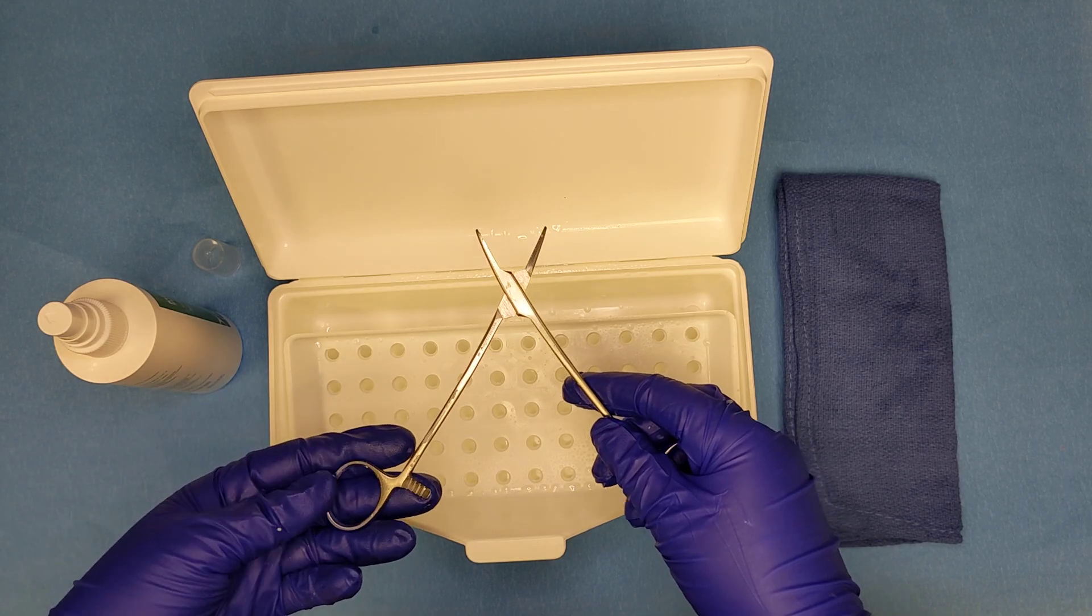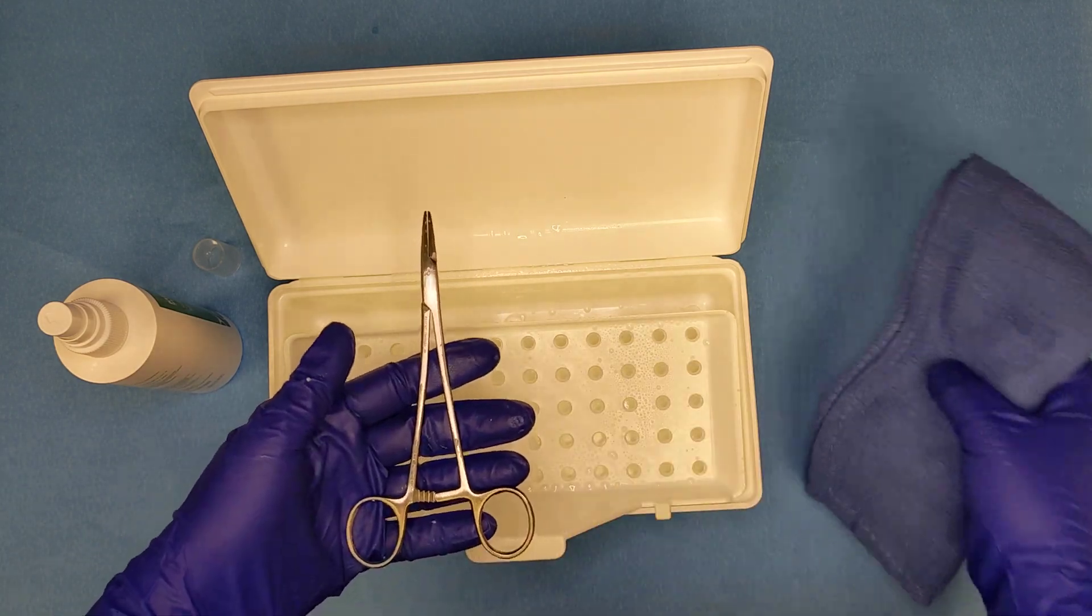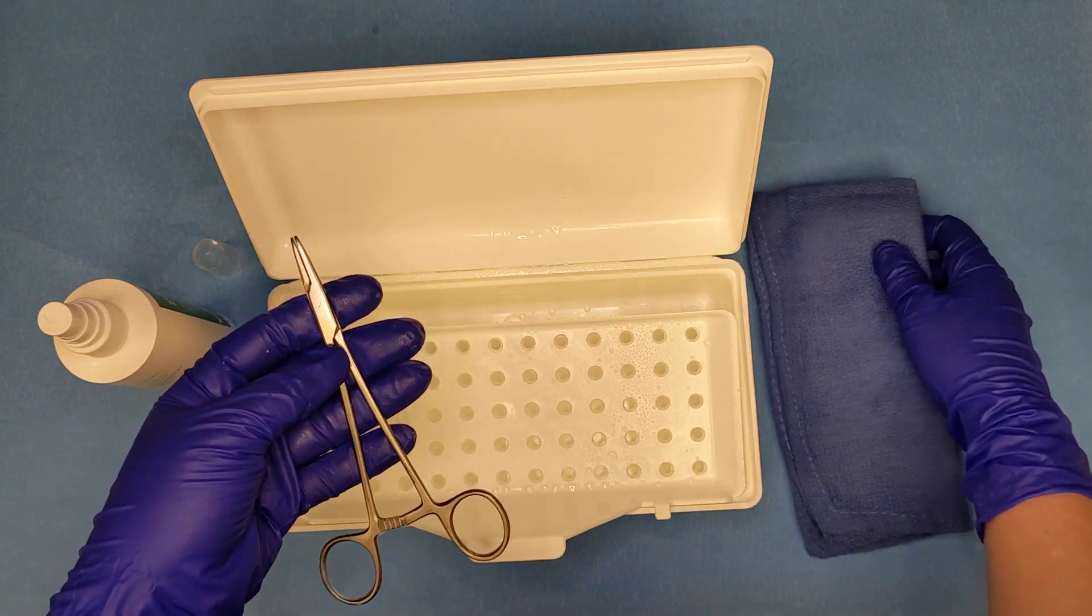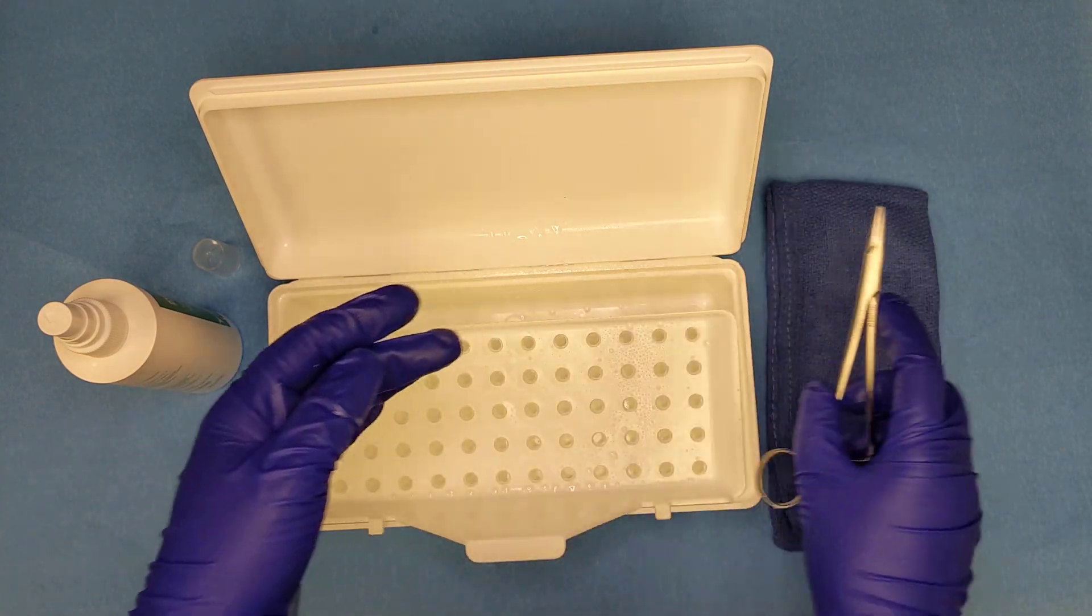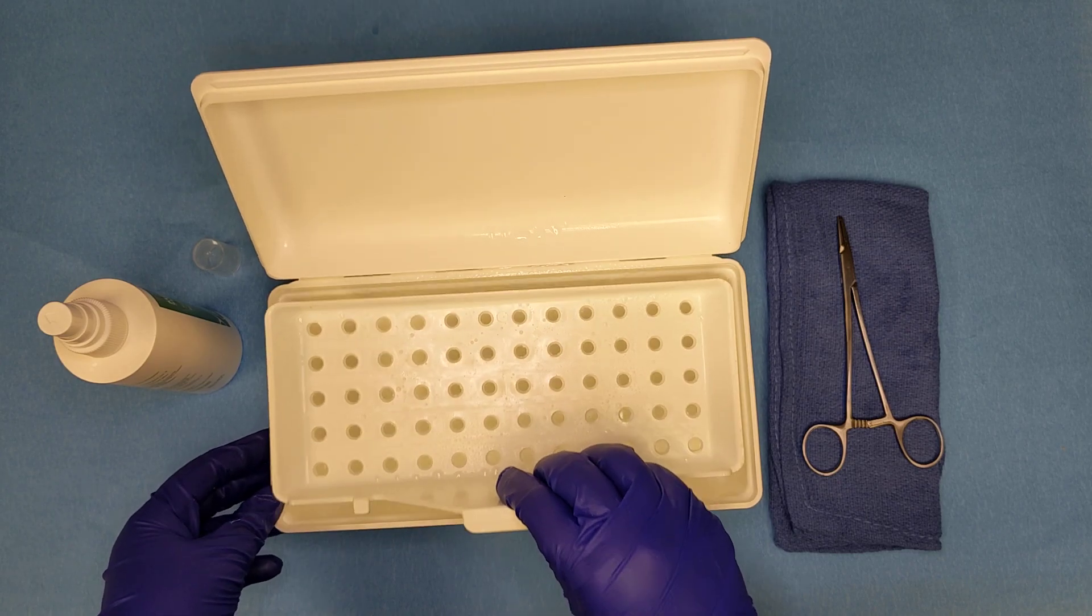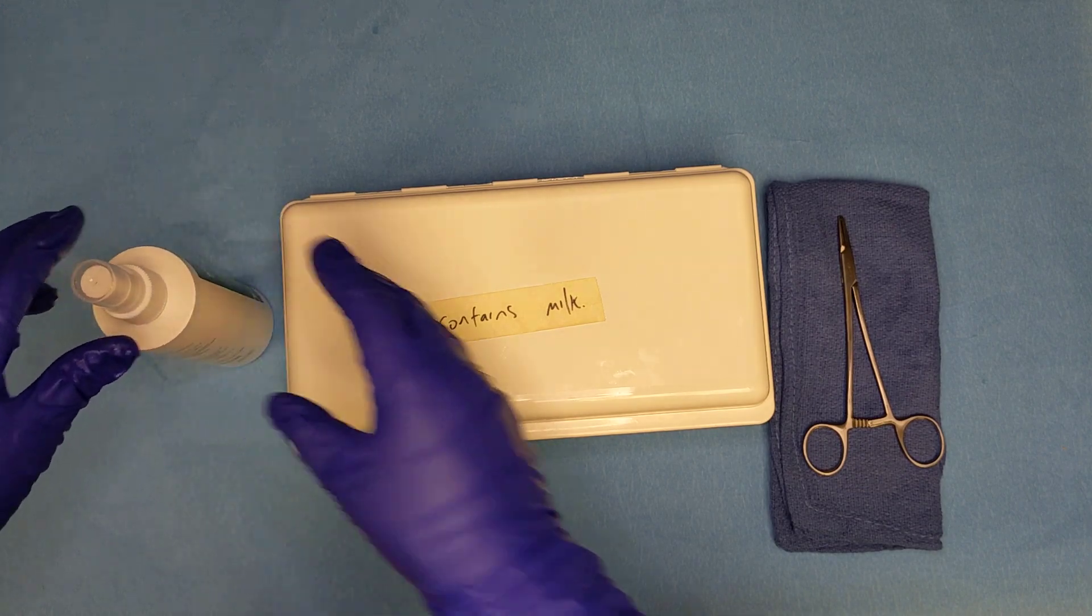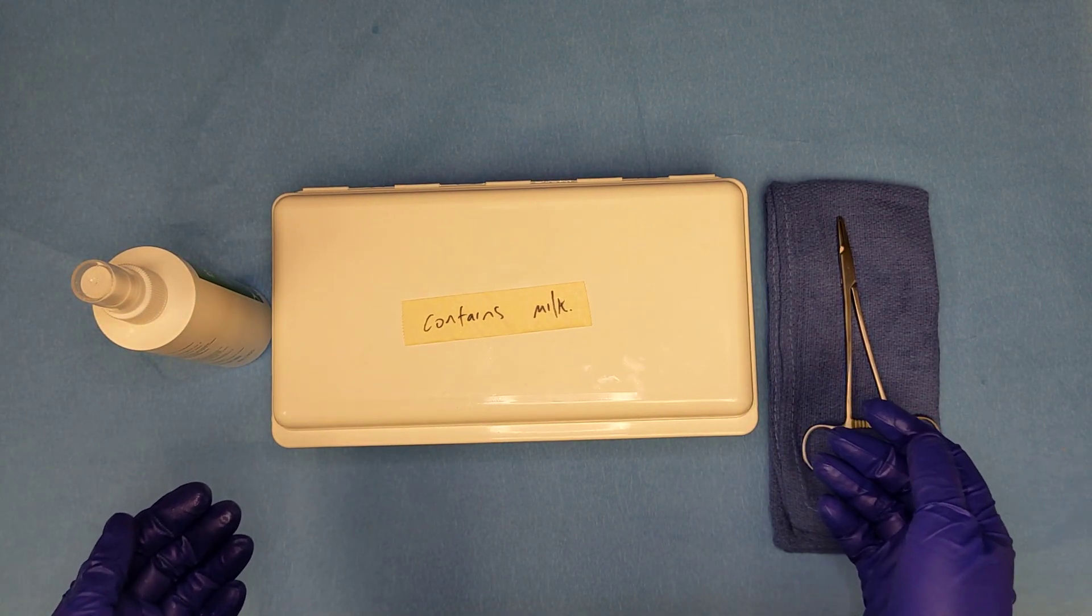If there happens to be any excess lubricant, we can use our soft cloth to wipe off the instrument, although the instructions on the bottle say we don't need to. Then we're going to reassemble our station, and that is how to manually lubricate an instrument.